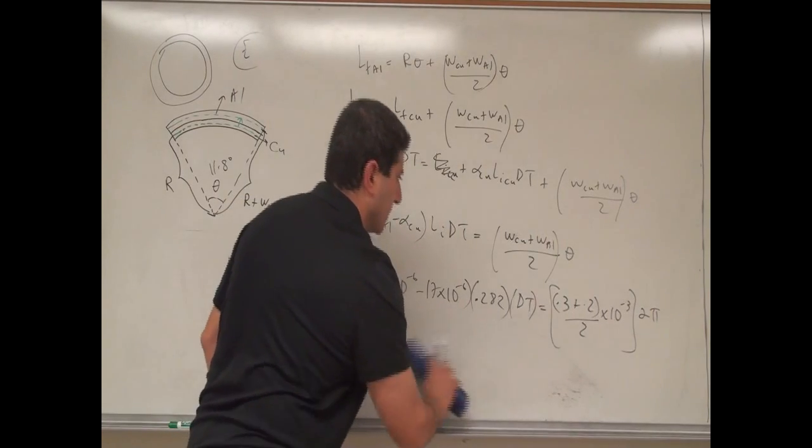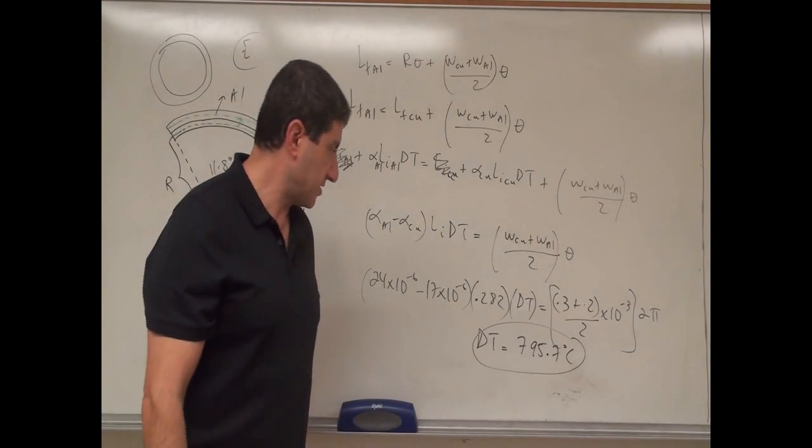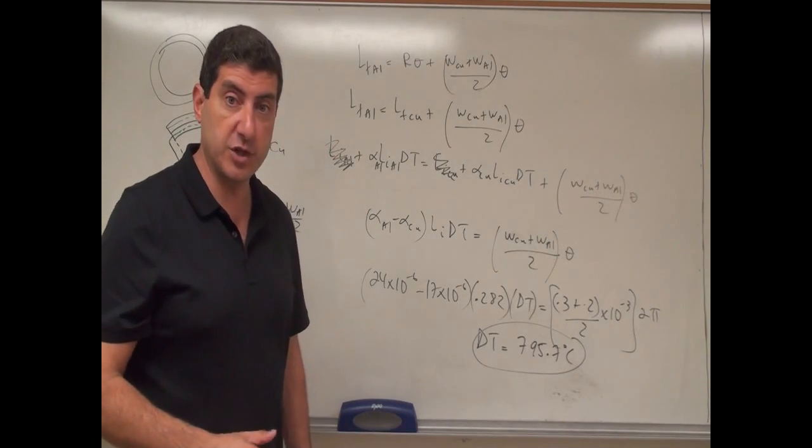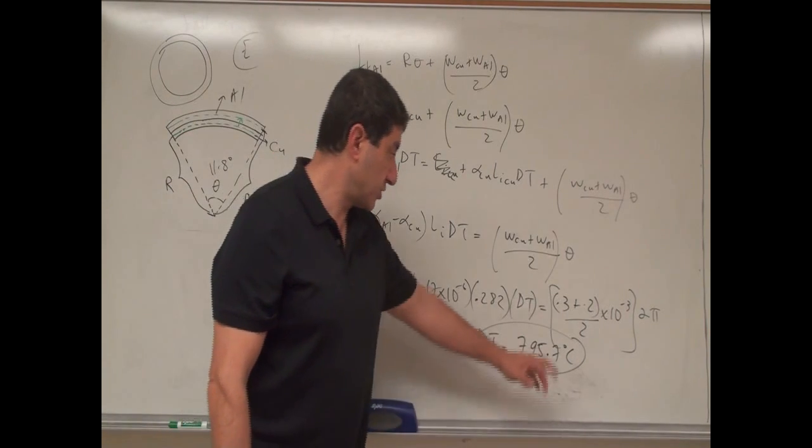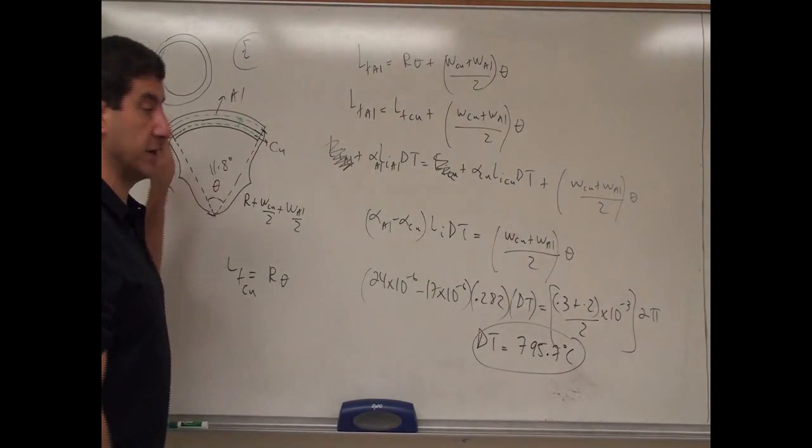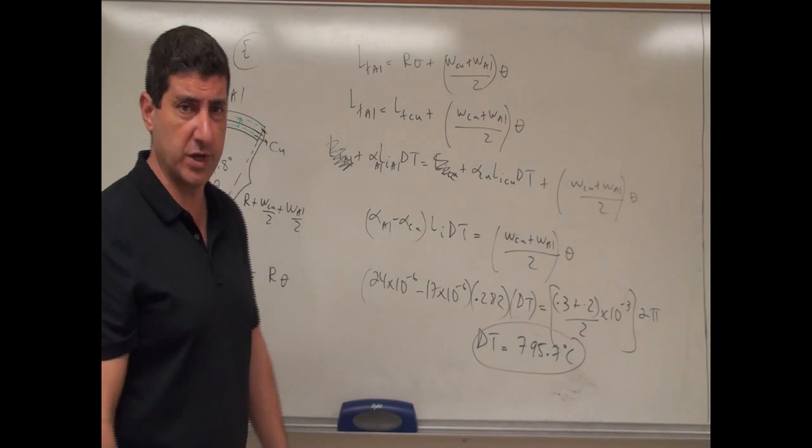So let's see what we get there. So you can see there, from there, that the temperature would have to increase quite a bit, 795.7 Celsius, for it to curve up. But that's actually not that hard, because metals heat up very quickly.